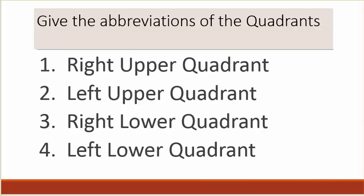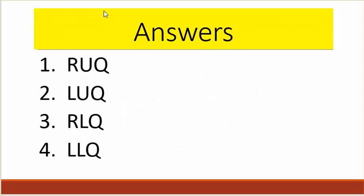Give the abbreviations of the quadrants — pause the video folks. Number one is right upper quadrant. Number two is left upper quadrant. Number three is right lower quadrant. Number four is left lower quadrant. Number one: R-U-Q. Number two: L-U-Q. Number three: R-L-Q. Number four: L-L-Q.